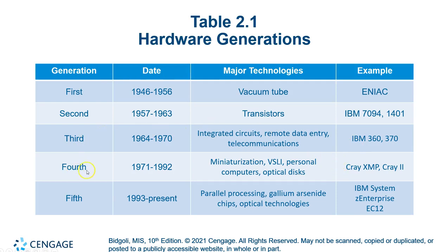In the fourth generation, everything's getting smaller. Now we're storing things on CDs, compact discs, and optical discs — lasers and things like this. Computers got much, much more capable, and the price went lower and lower.